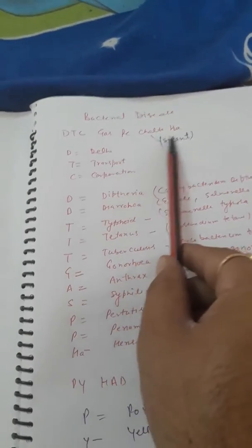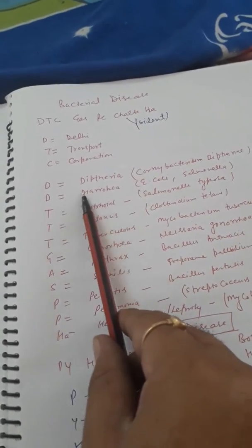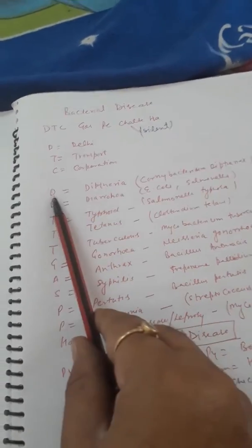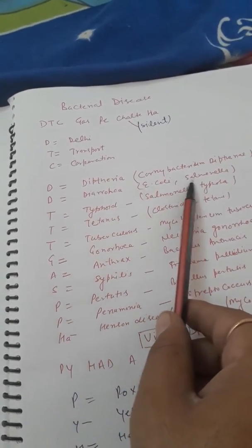So D se ban jata hai aapka Diphtheria. Diphtheria joh hai Corynebacterium diphtheria disease cause karta hai. Phir D se aapka ban jata hai Diarrhea. Diarrhea joh hai E. coli or Salmonella bacteria disease cause karta hai.